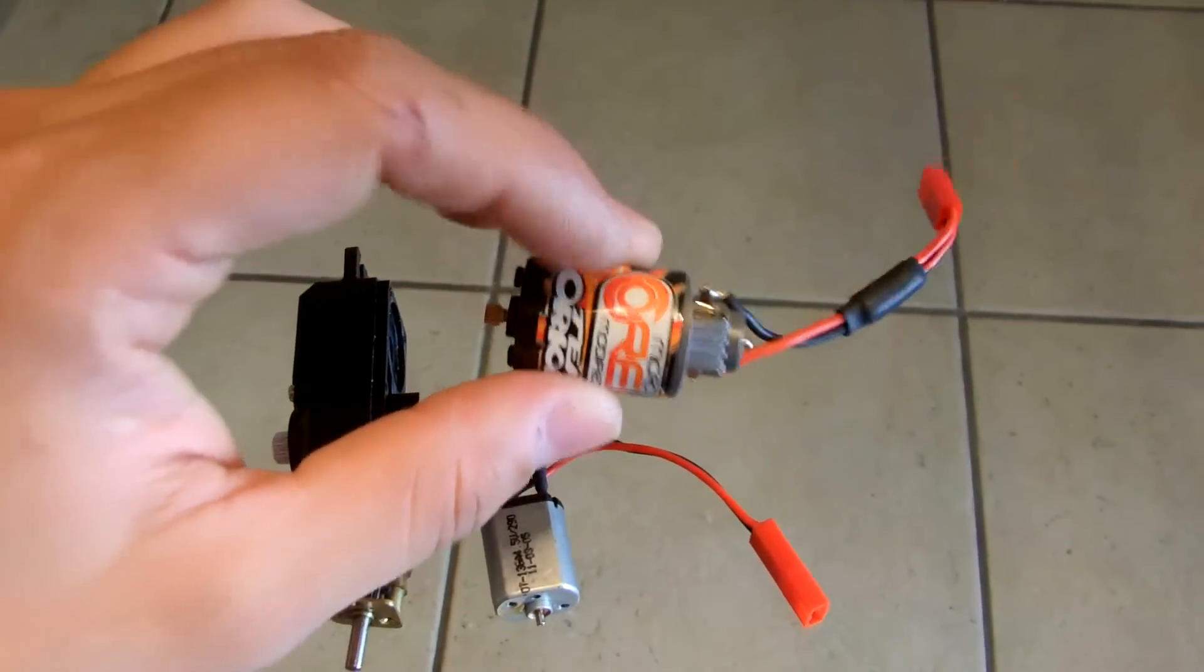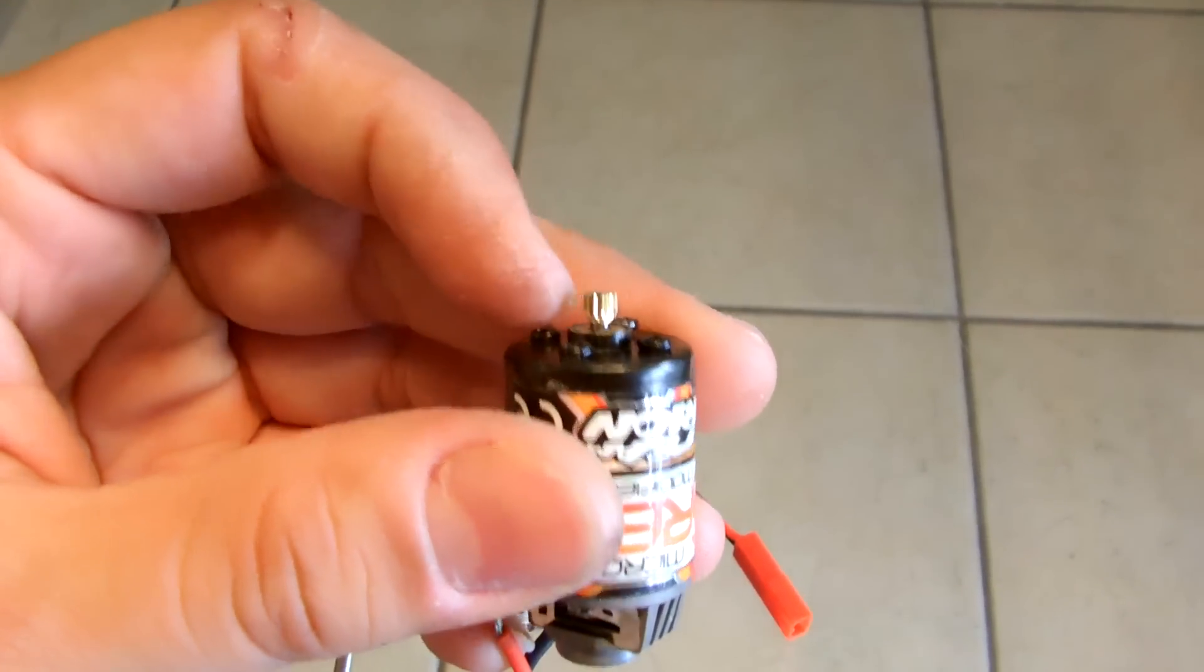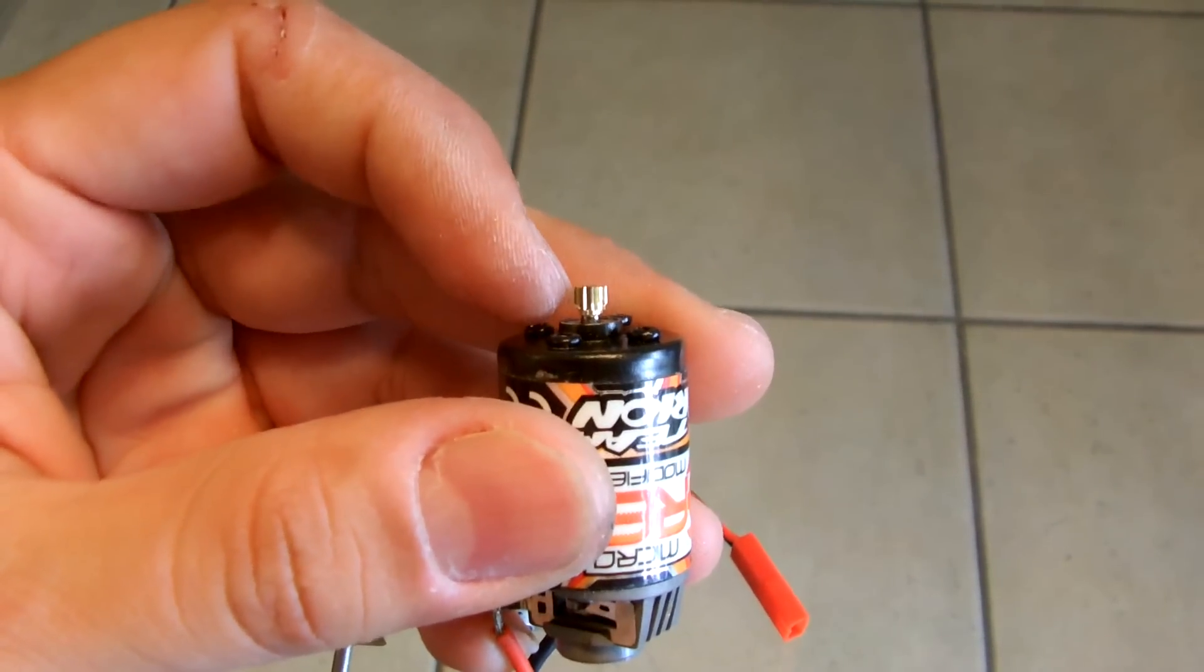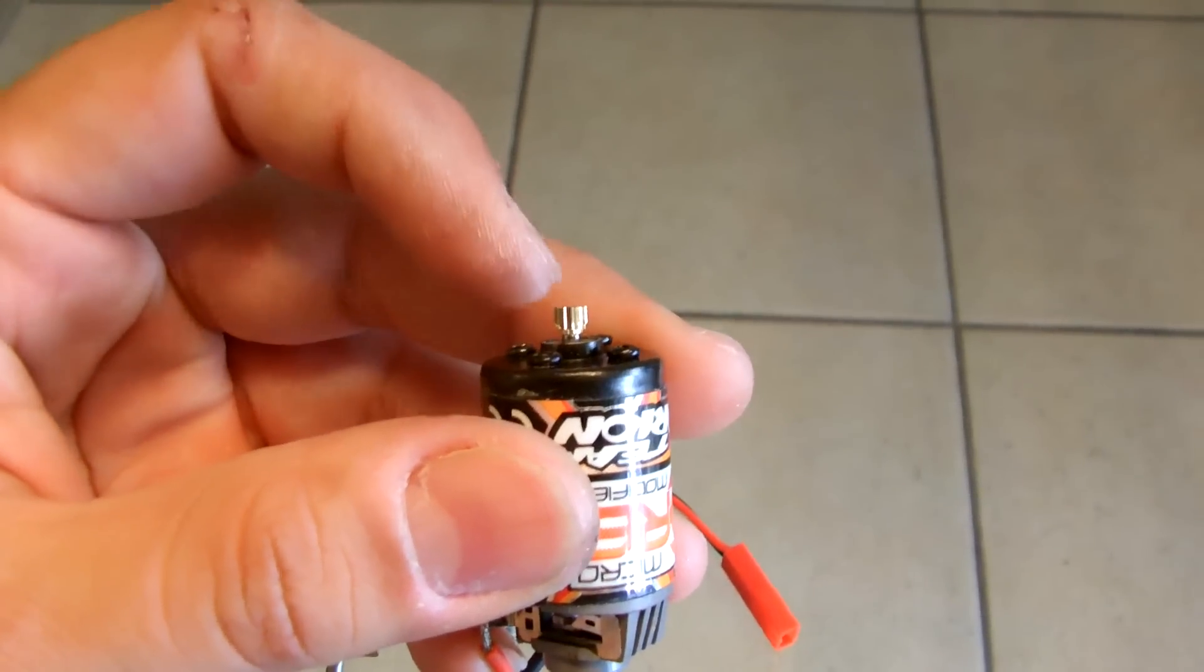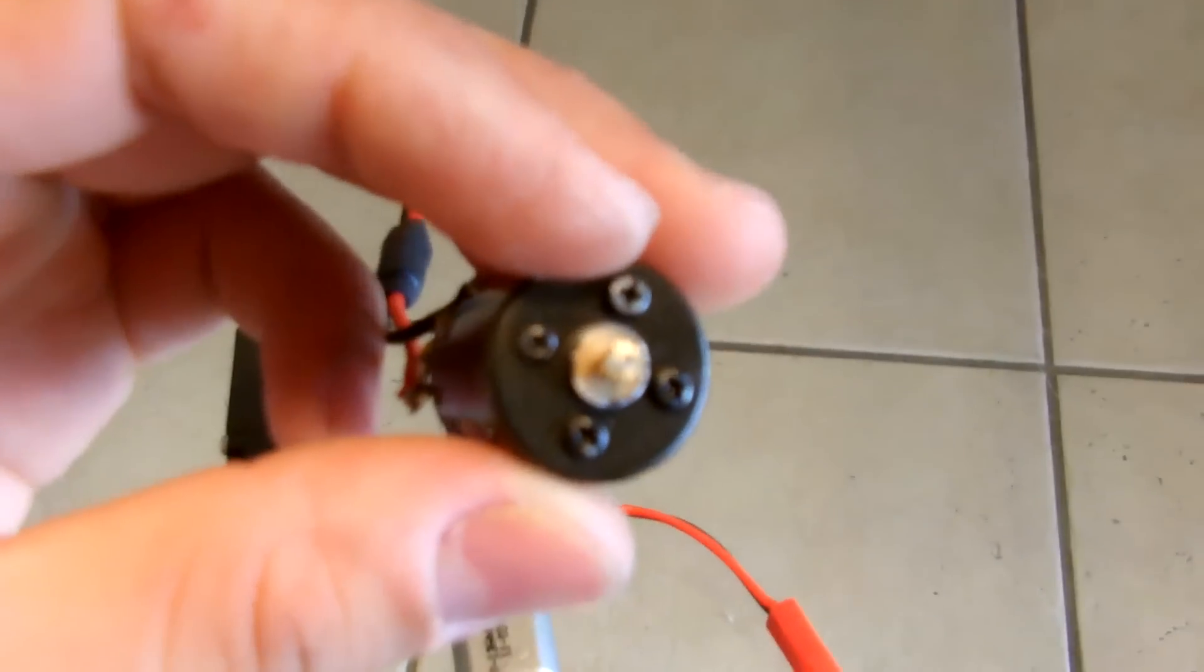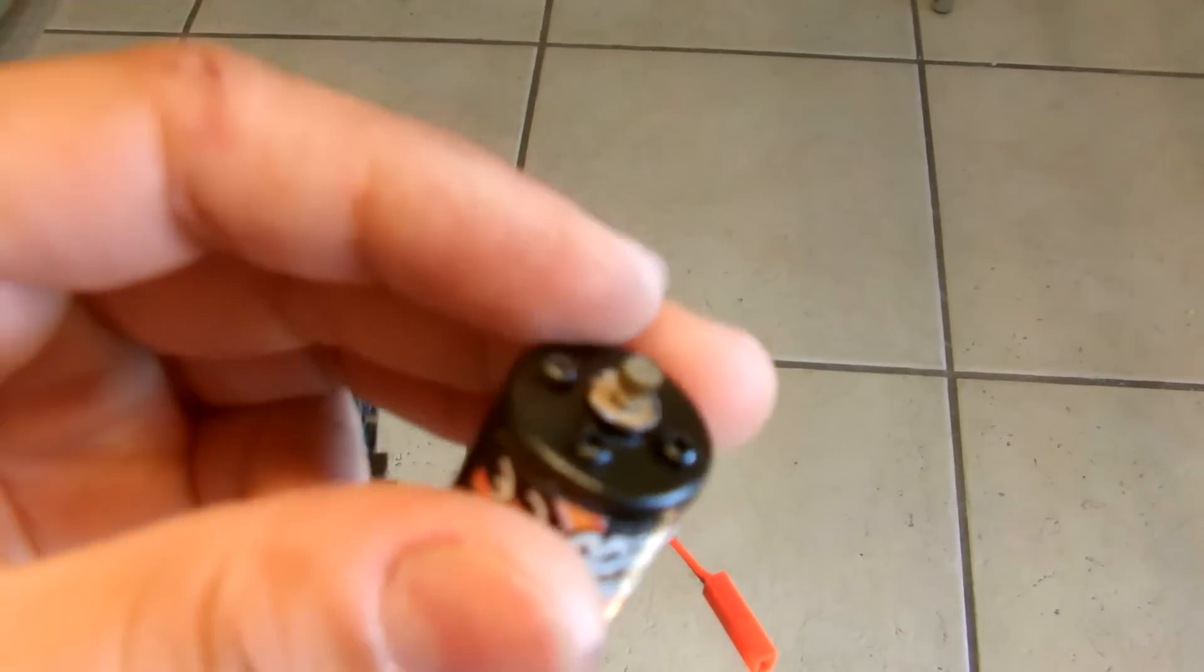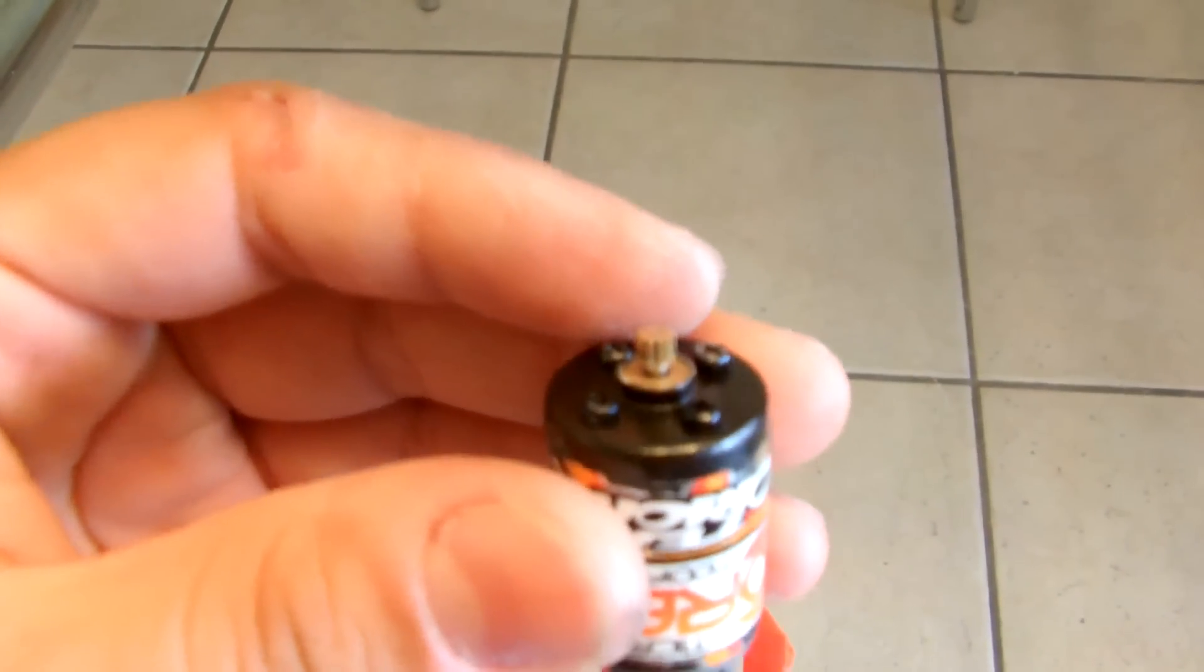This thing will just drop right in there. I actually had to grind down the shaft that came out of this motor. I cut a little piece of it off and then ground it down to where it will actually fit inside the pinion gear that goes into the servo.